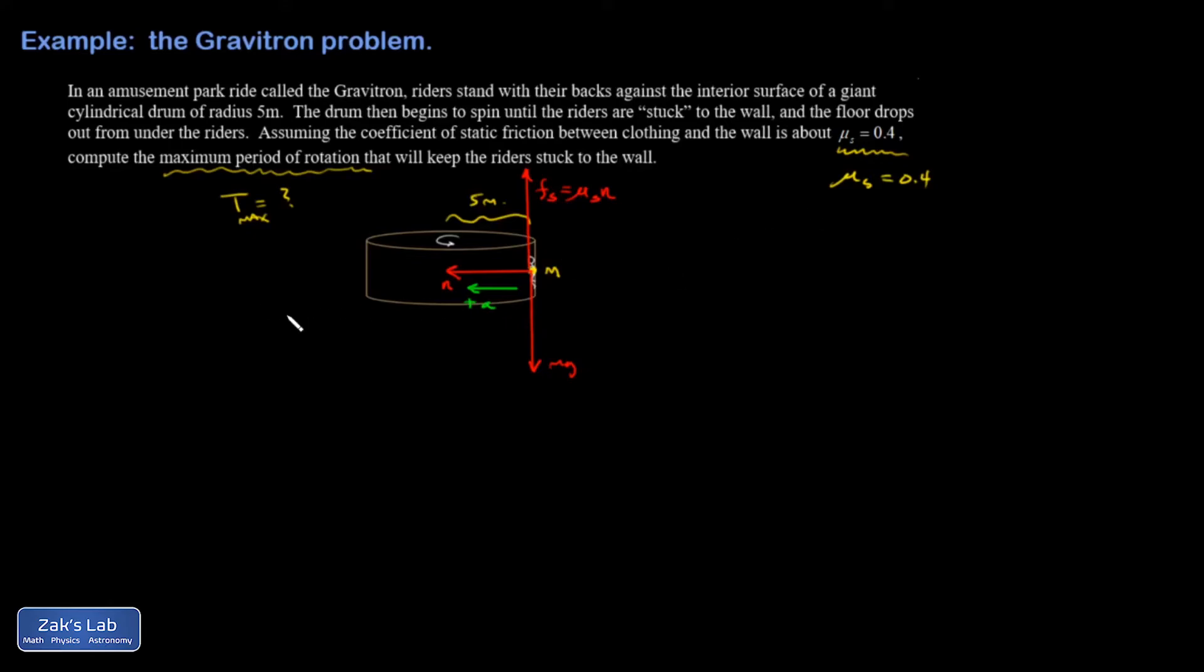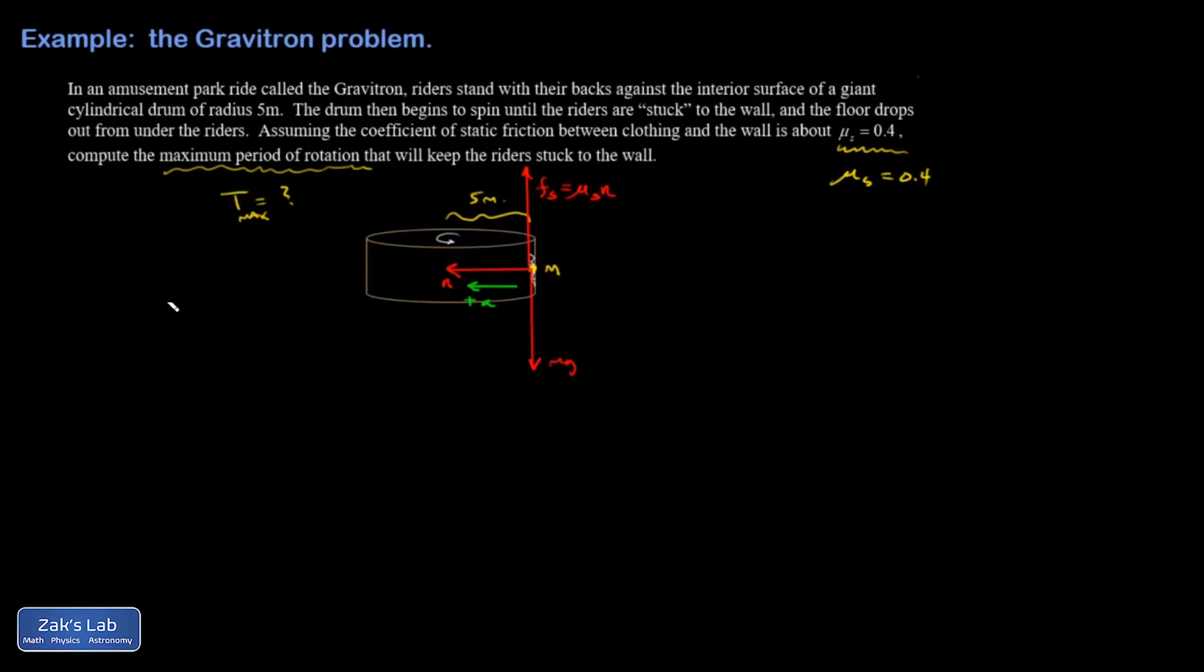One more note before I get into the calculations is that I have the period of rotation here. I don't have the speed of the rider. The approach that I'm going to take is to just quote a formula for the centripetal acceleration that is phrased in terms of period. So I'm going to use this. All that is is a reworking of v² over r where this is plugged in.